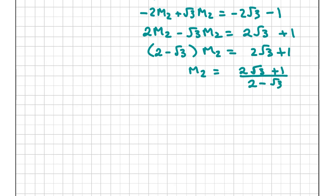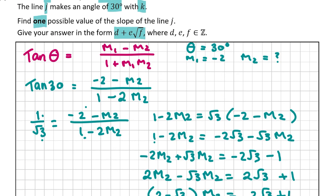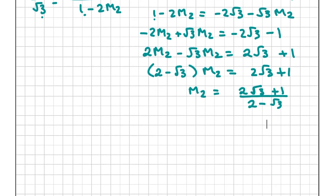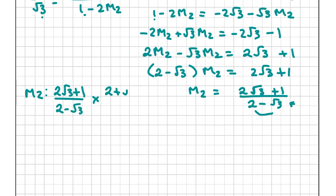This is correct but not in the required form D + E√F. We have a fraction and need to rationalize the denominator. We do this by multiplying above and below by the conjugate (2 + √3), because (2 - √3)(2 + √3) = 1. So M2 = (2√3 + 1)(2 + √3) / ((2 - √3)(2 + √3)).